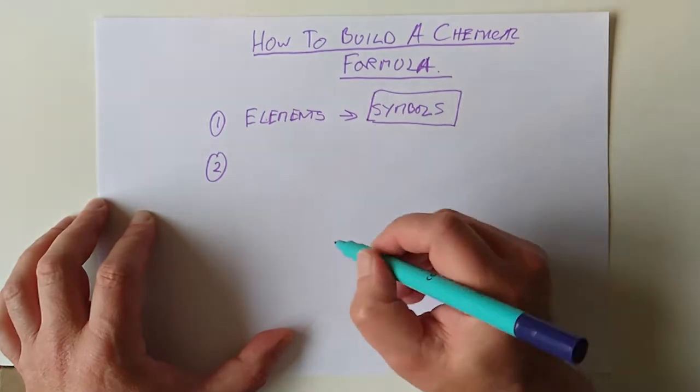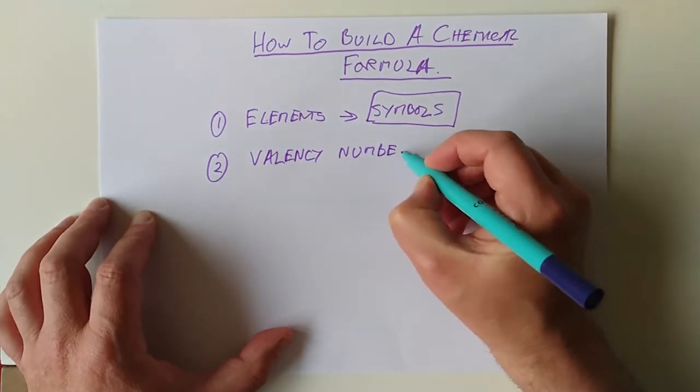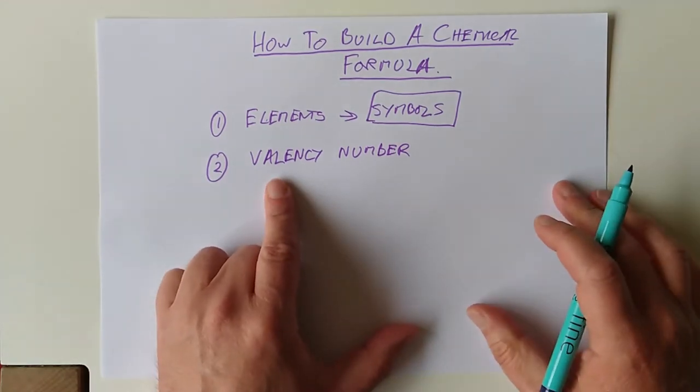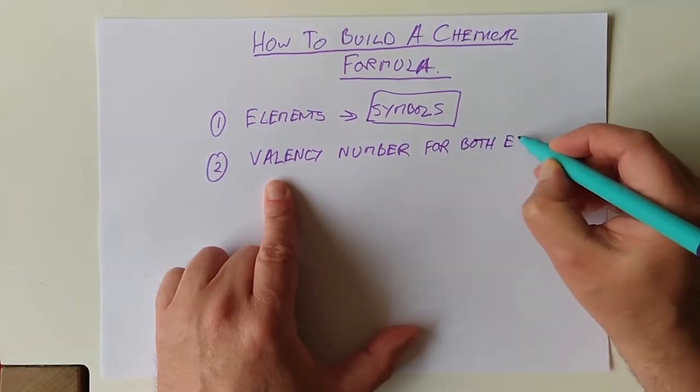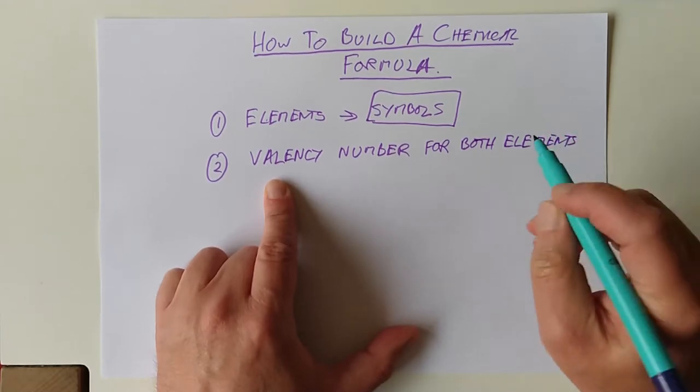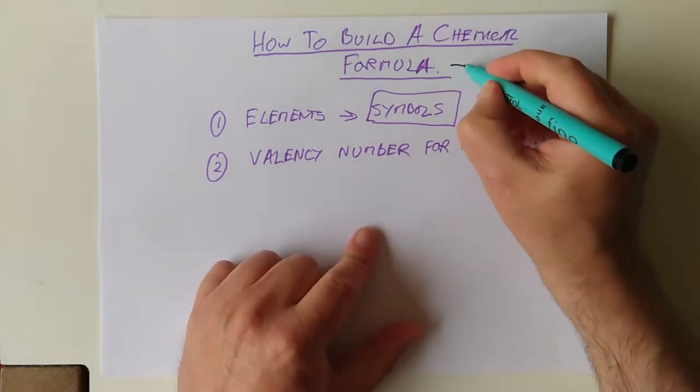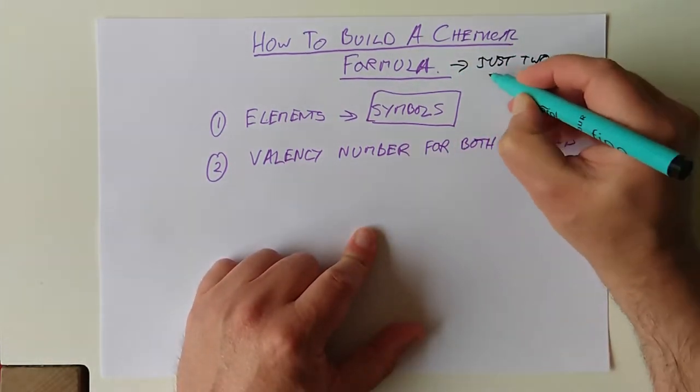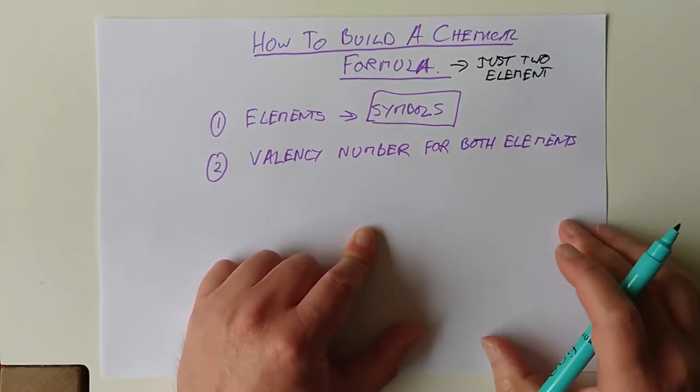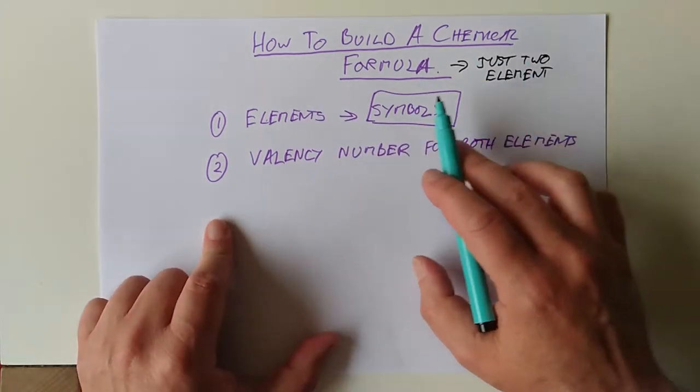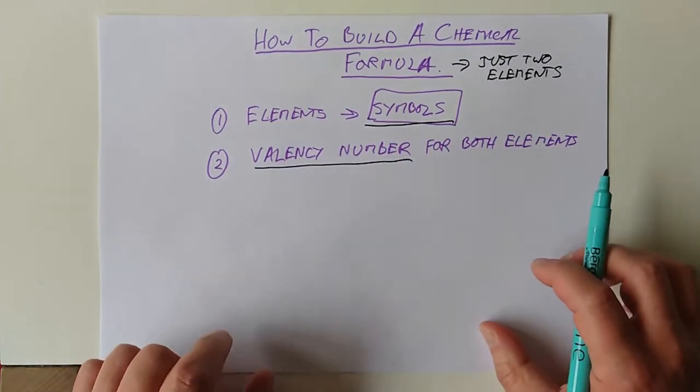You need to know the symbols for your elements. That's number one. Secondly, you need to know something called a valency number. What on earth is that? Well, we'll come back to that perhaps later on. Let's just stick with being able to use them today. So, you need to know the valency number for both of your elements.